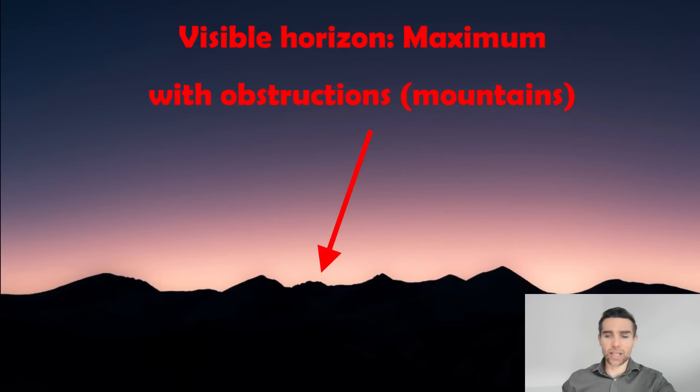So here, if we're looking into the distance and you've got those mountain ranges there, then that is obviously going to obstruct the true horizon. So the true horizon is more like the theoretical limit, whereas the visible horizon is what we would actually observe with obstructions, like mountains.